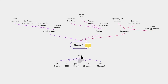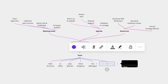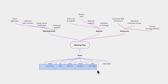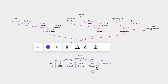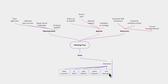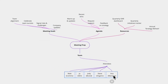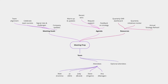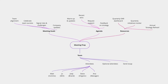Let's click team and press tab. We'll call this new node 'attendees.' Now let's select these nodes and drag them one level down. We'll create two more branches named 'optional attendees' and 'send recap.' There — we have plenty of room for everyone.